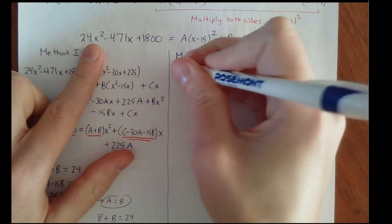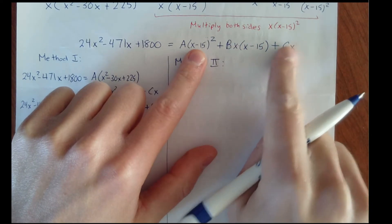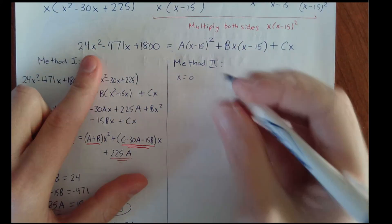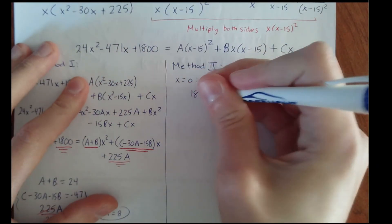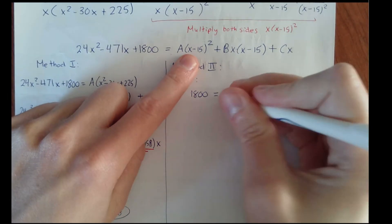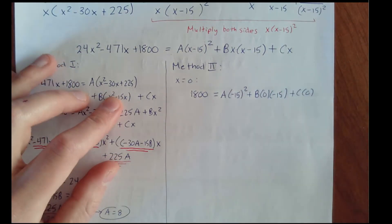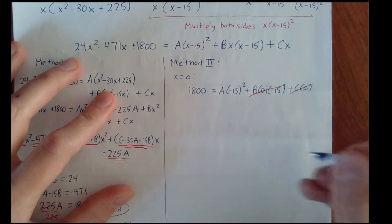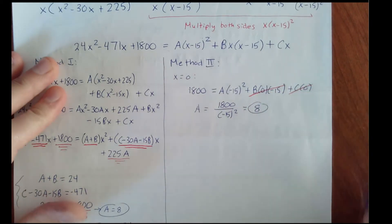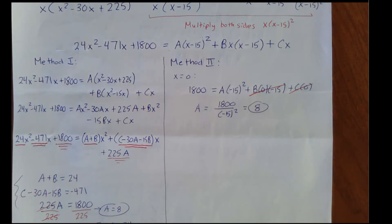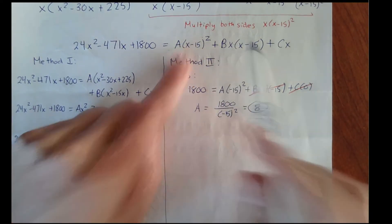For example, plugging in x equals 0 will cancel the B term and the C term, since both are multiplied by x. On the left side with x equals 0, the expression simplifies to 1800. On the right, we get A times negative 15 squared, with the B and C terms going to zero. So A equals 1800 divided by negative 15 squared, which equals 8.